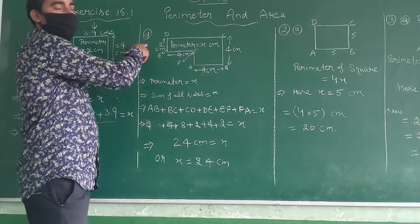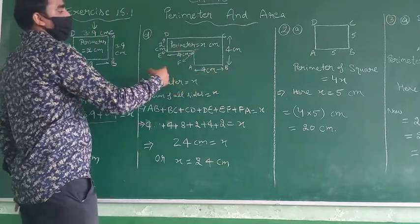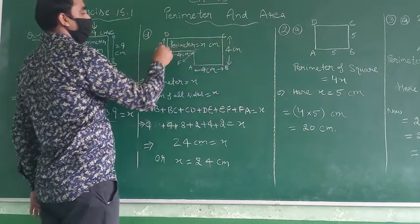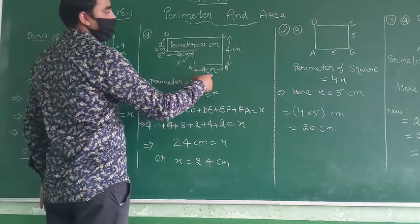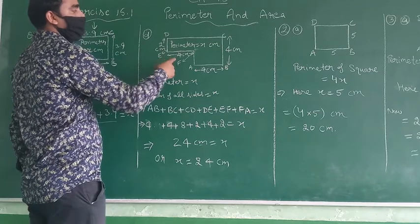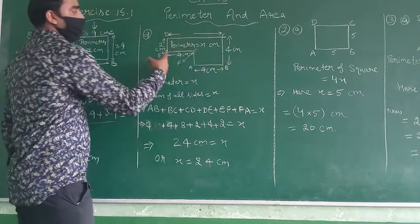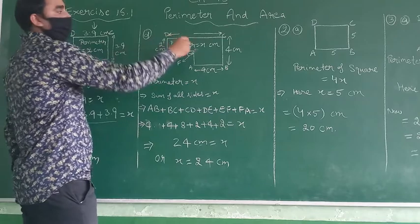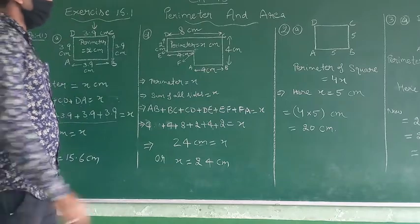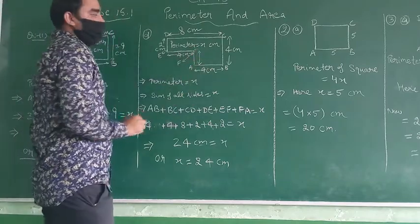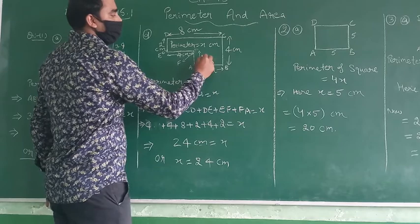So now come to question number part B. These are the two questions. We have some values. Suppose this is A, B, C, D, E, F. We have values 4 cm, 4 cm, 2, 4. But we will find the first value of this length. This is also 4, this is also 4. This is opposite of these things, so it means also 4 plus 4 equals 8 cm. And this is 2, the opposite side is 4 cm, so it means also 2 cm.